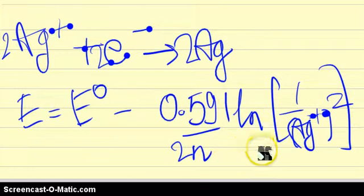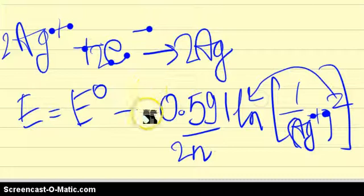Since this is a log term, I can take this 2 outside and if I do that, this comes over here, it becomes 2 into 0.0591 and there is an extra 2 here. This gets cancelled out.